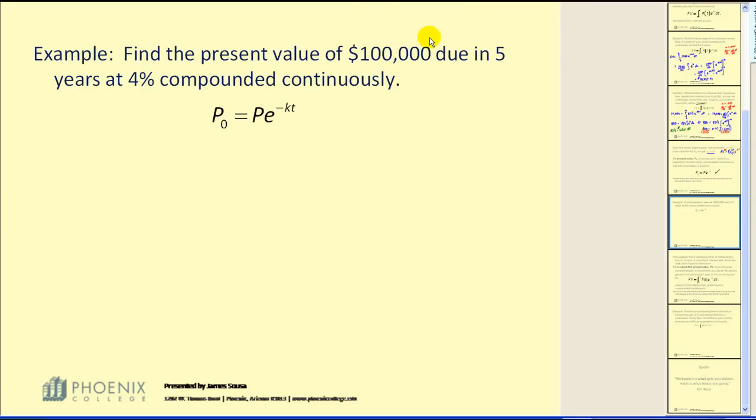Let's go ahead and take a look at an example of this. Find the present value of ten thousand dollars due in five years at four percent compounded continuously. The present value is equal to ten thousand dollars times e to the power of negative 0.04 times five. Pretty straightforward. This comes out to $8,187.08. That's how much we'd have to deposit today to have ten thousand dollars in this account five years from now.